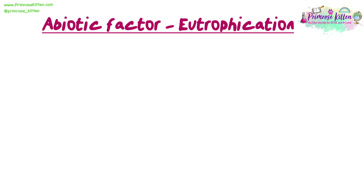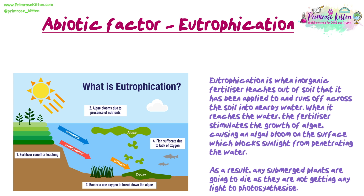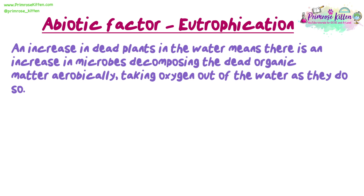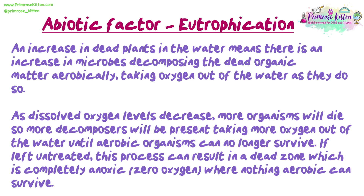Dissolved oxygen levels can also be reduced in a water body by the process of eutrophication. Eutrophication is when inorganic fertiliser leaches out of soil and runs off into nearby water. The fertiliser stimulates the growth of algae, causing an algal bloom on the surface which blocks sunlight from penetrating the water. Submerged plants then die as they cannot photosynthesise. An increase in dead plants means more microbes decomposing organic matter aerobically, taking oxygen out of the water. As dissolved oxygen decreases, more organisms die and more decomposers are present, until aerobic organisms can no longer survive. Left untreated, this creates a completely anoxic dead zone where nothing aerobic can survive.